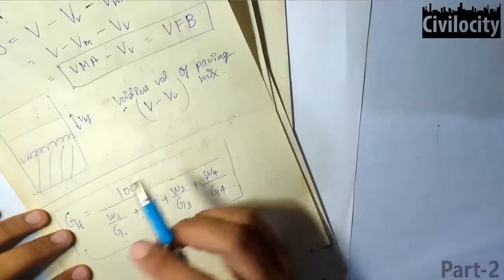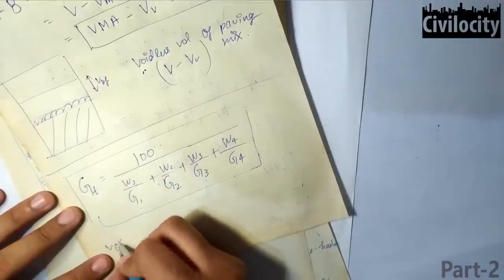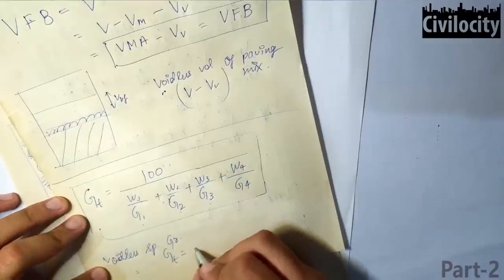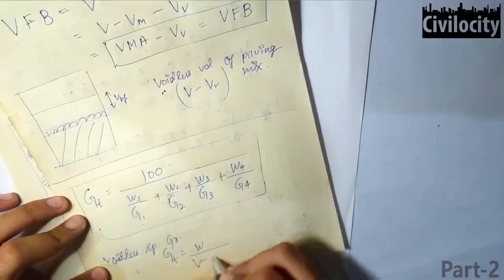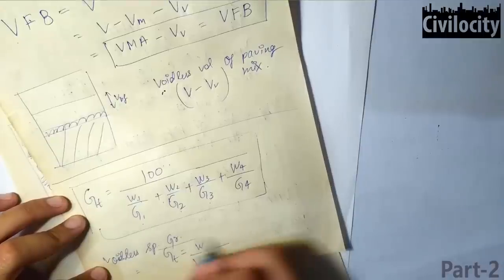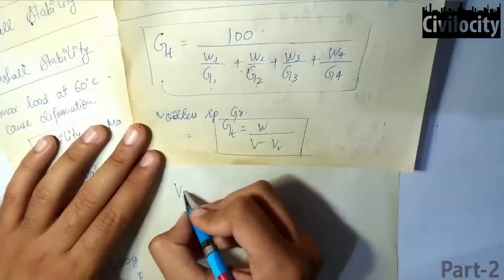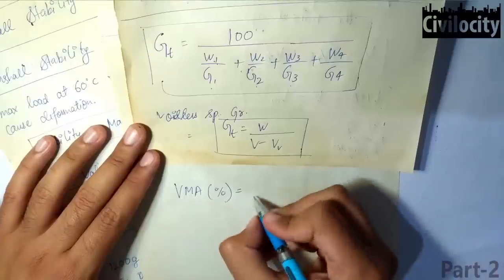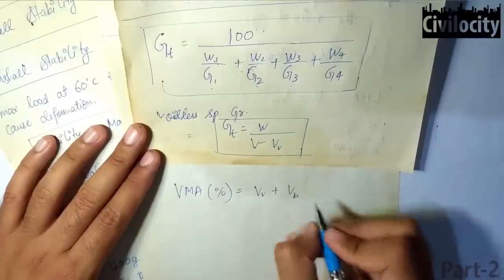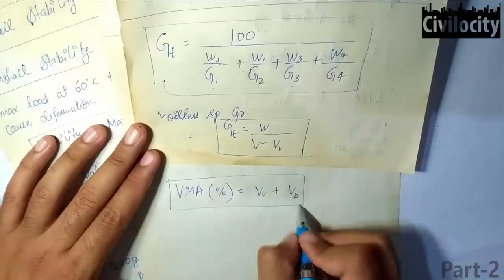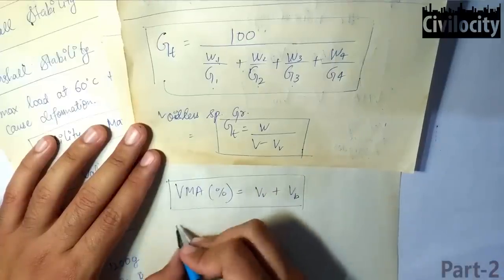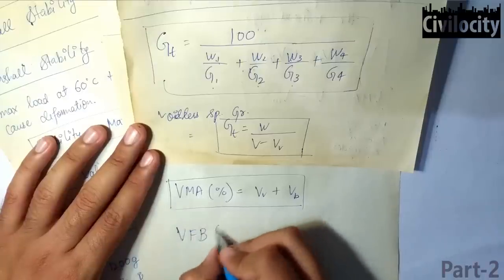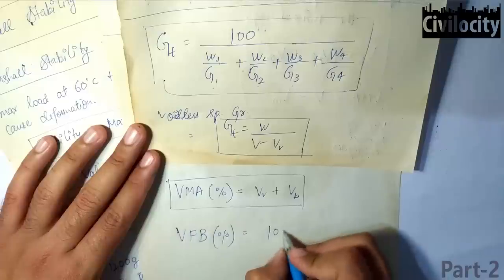The voidless specific gravity is given as Gt equals W divided by (V minus Vv). Two more formulas: the void in mineral aggregate percentage, VMA%, equals Vv plus Vb. The percentage of voids filled with bitumen equals 100 times Vb divided by VMA.